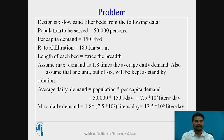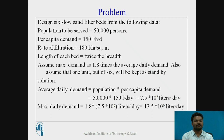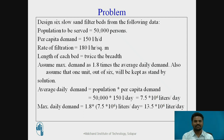Now we will solve a design problem. Design 6 slow sand filter beds given: population to be served = 50,000; per capita demand = 150 liters per head per day; rate of filtration = 180 liters per hour per m²; length of each bed = twice the breadth; maximum daily demand = 1.8 times average demand; and 1 unit out of 6 to be kept as standby.